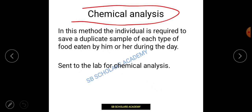In the chemical analysis method, the individual is required to save a duplicate portion of each type of food eaten during the day. This is often confused with biochemical or laboratory methods, but it is not. In this method, diet samples — not blood or body fluid samples — are stored and then sent to the laboratory to assess nutrient content. Chemical analysis comes under dietary assessment, not biochemical assessment.